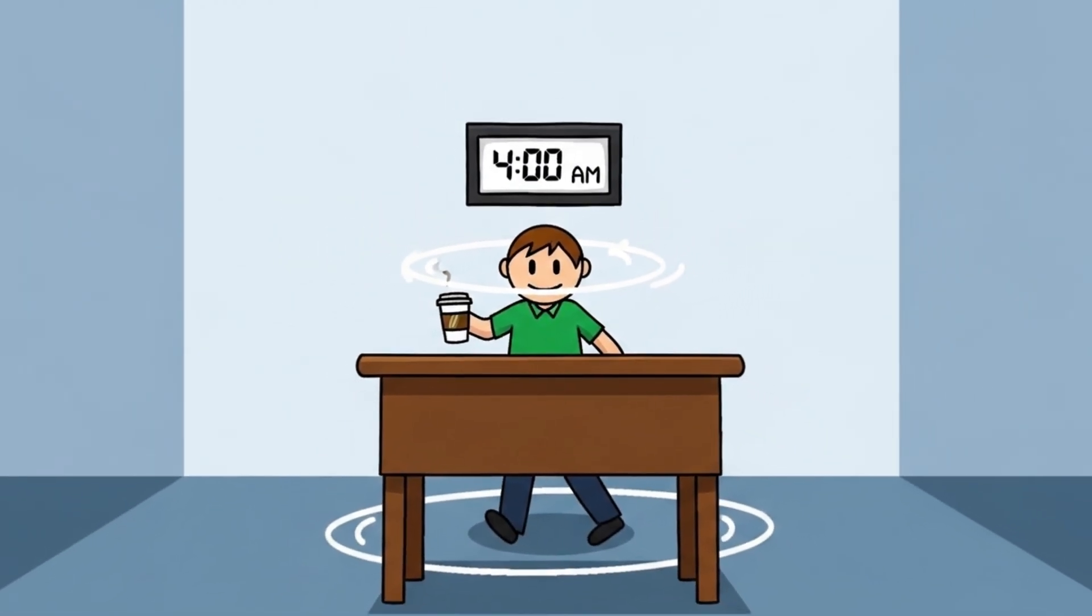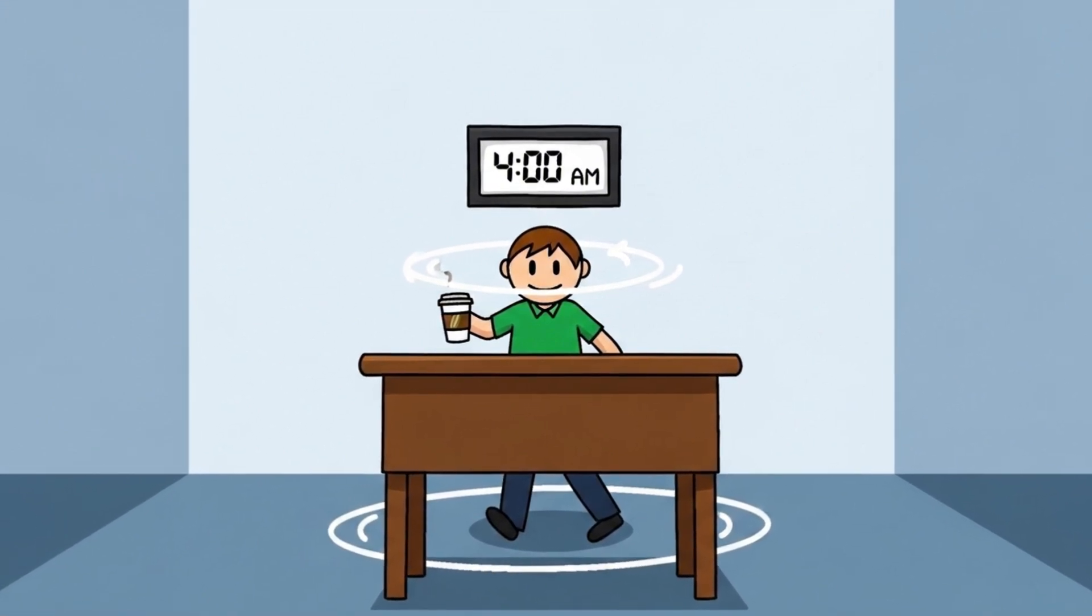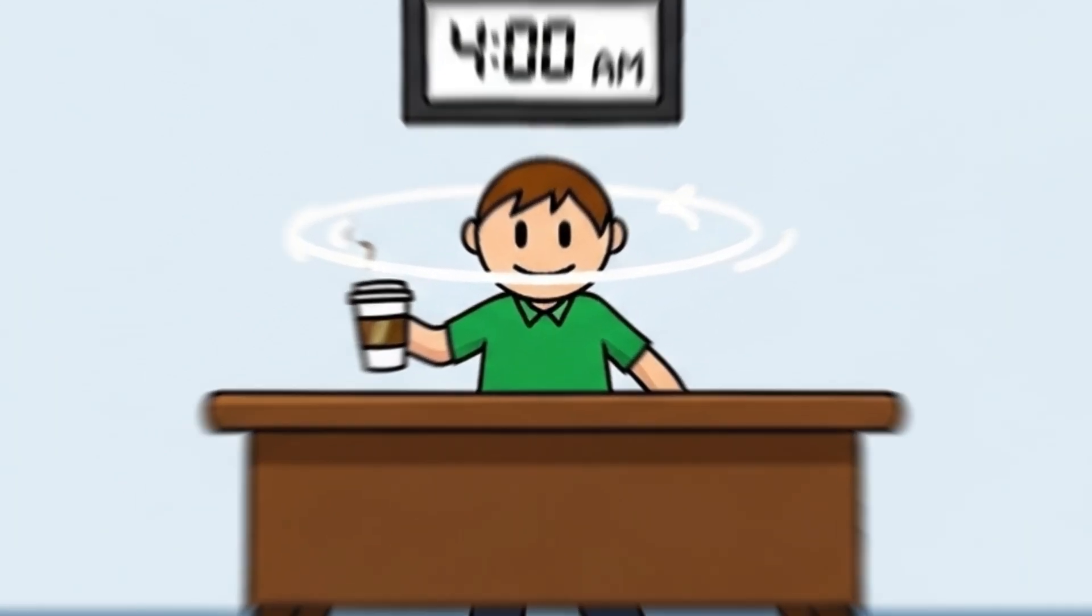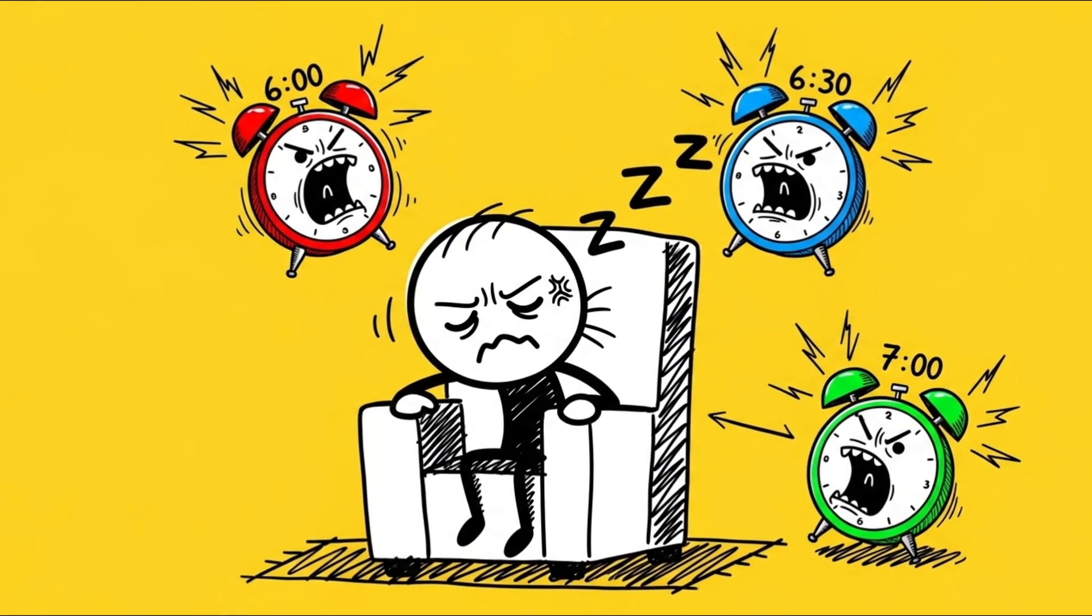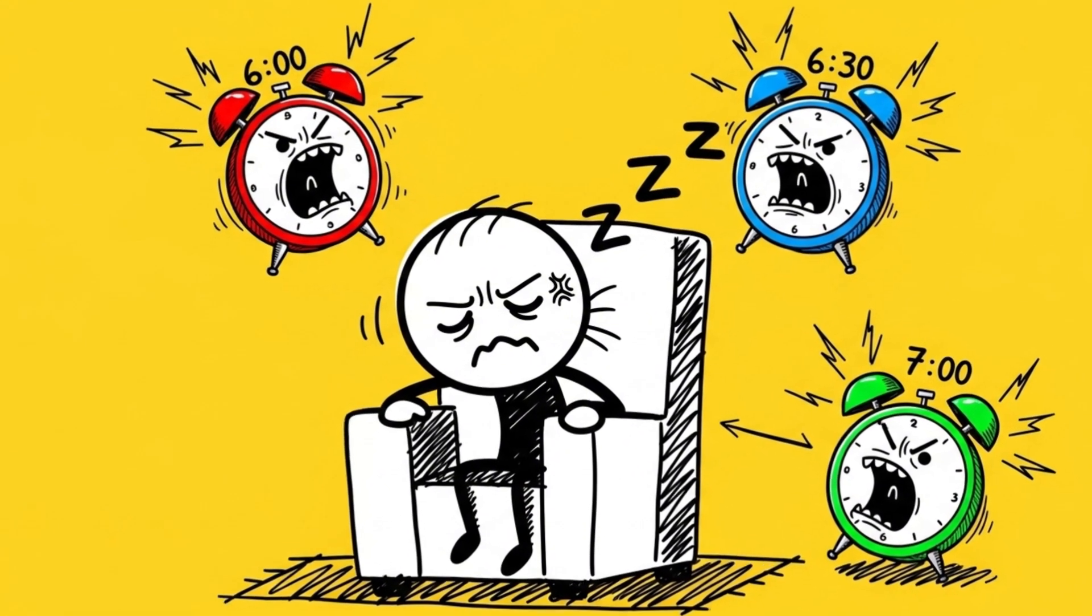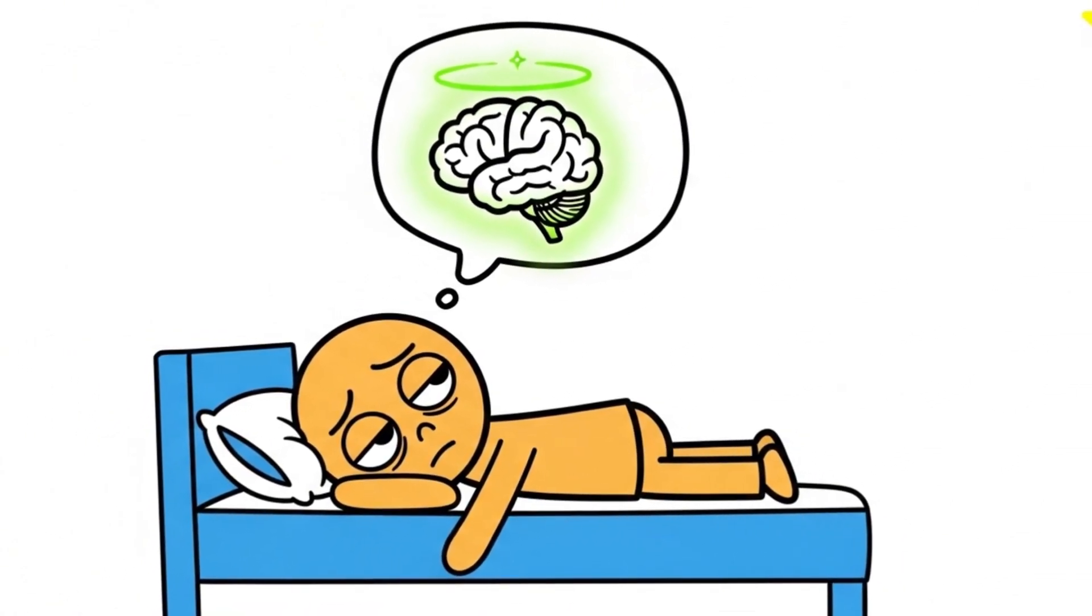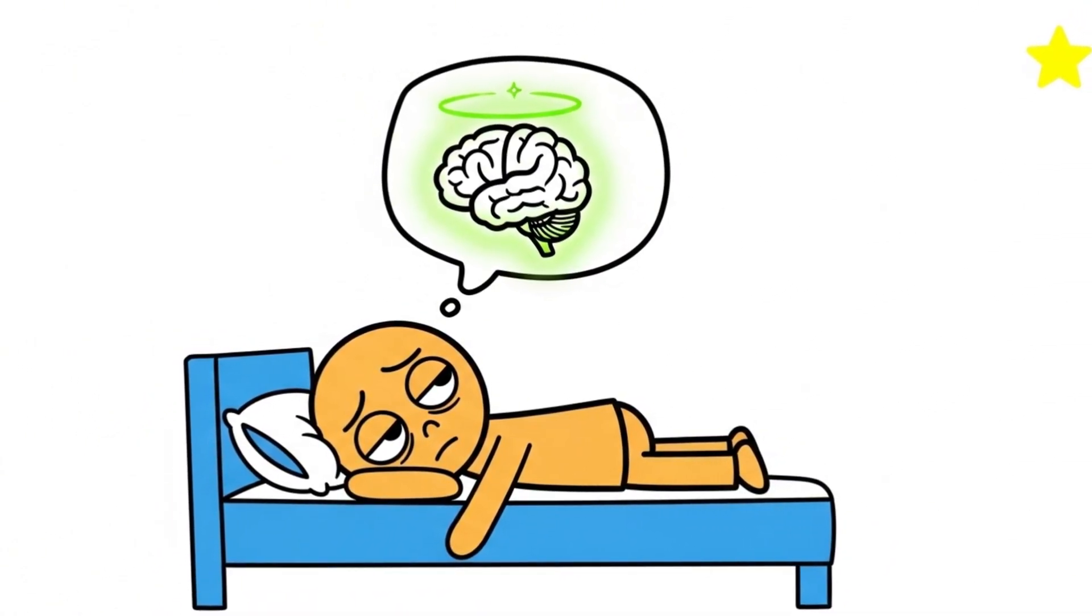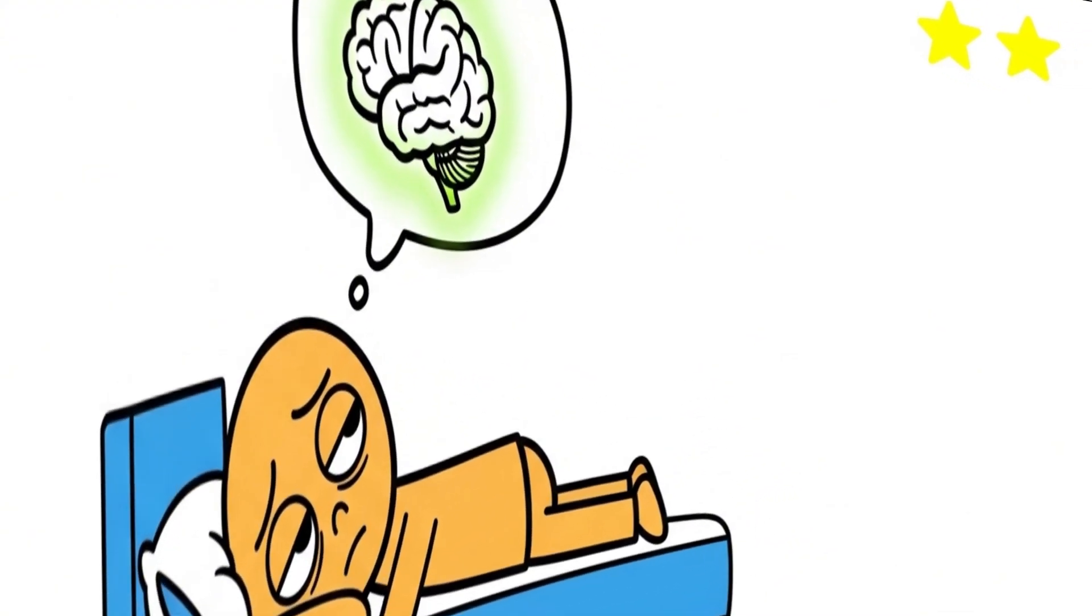But here's the kicker. EEG scans of some modern polyphasic sleepers show unusual bursts of REM activity that don't follow the typical 90-minute cycle. In other words, the brain is breaking its own rules. Whether this is a genius brain optimizing itself or just inventing a very slow form of torture is still unclear. But hey, nothing says I'm smarter than you like being wide awake at 2:17 a.m. for absolutely no reason.